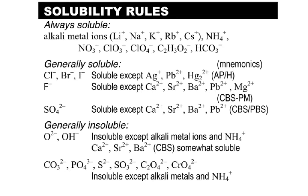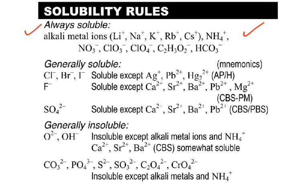When I teach solubility rules, I look at them in three different groups. First, here are the compounds that are always soluble. If you see an alkali metal ion — and I go ahead and list them all out, I don't assume students know what I'm talking about — then that compound would be soluble. Also ammonium compounds, nitrates, chlorates, perchlorates, acetate, and bicarbonates. These compounds are always, always soluble, and that is a rule the AP exam asks students to know.